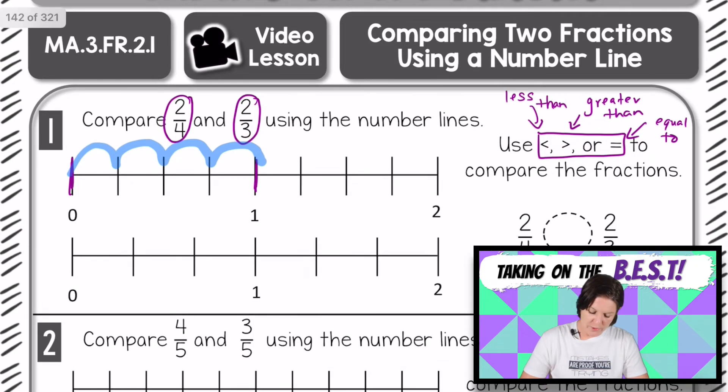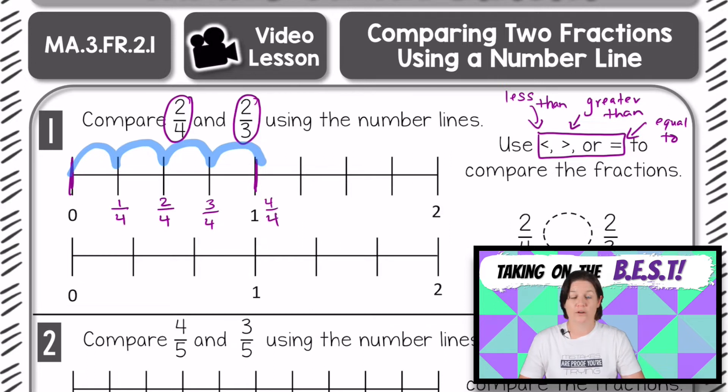So that makes perfect sense for plotting 2/4. So going one jump would be 1/4, the next jump would be 2/4, then we have 3/4, and finally one would be the same thing as 4/4. That makes it easy for us to plot where 2/4 is. Let's put a point right here. There is where 2/4 is located.